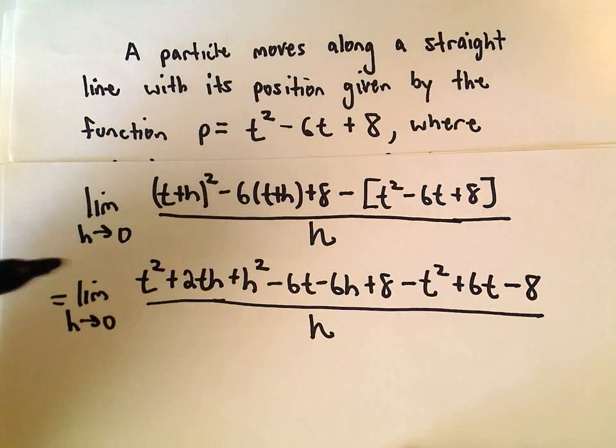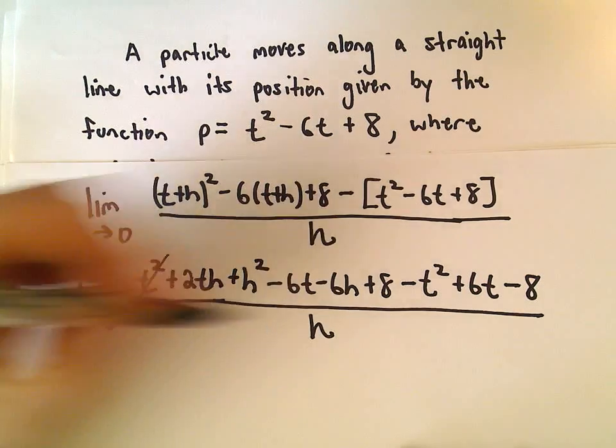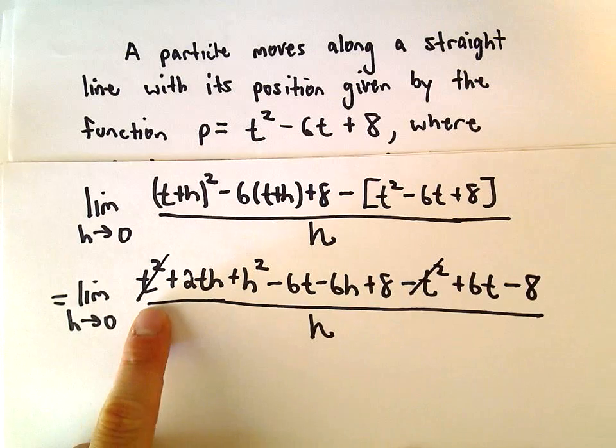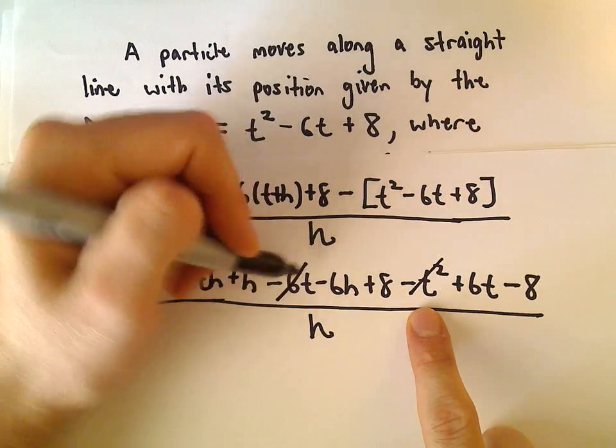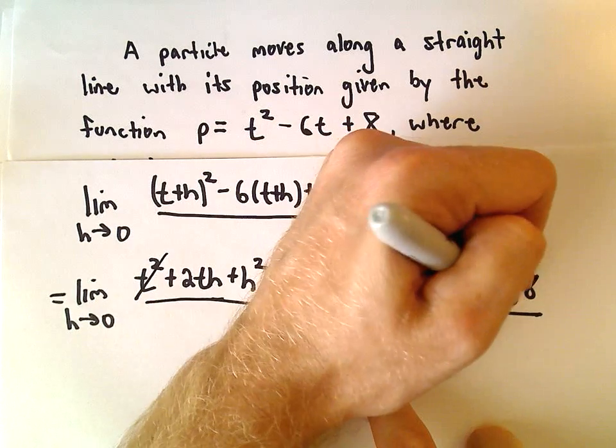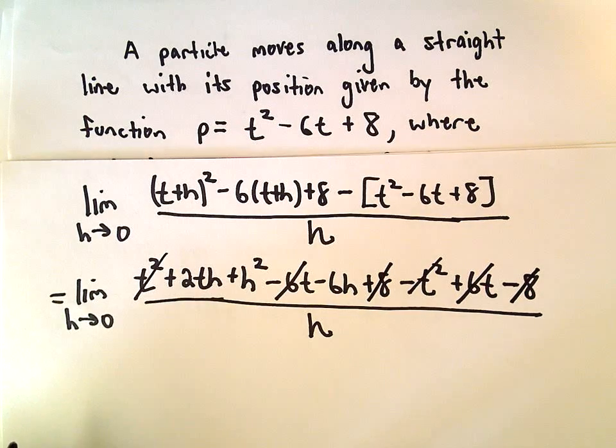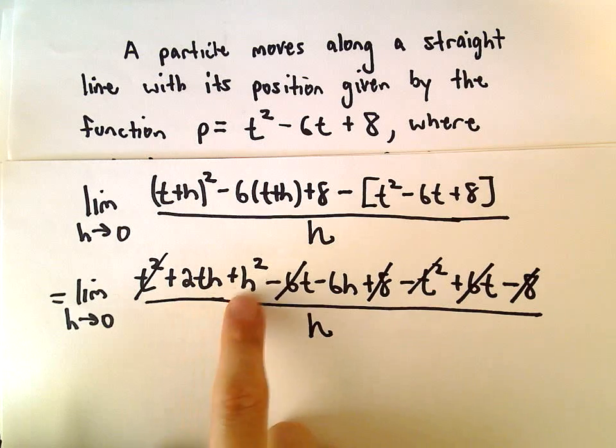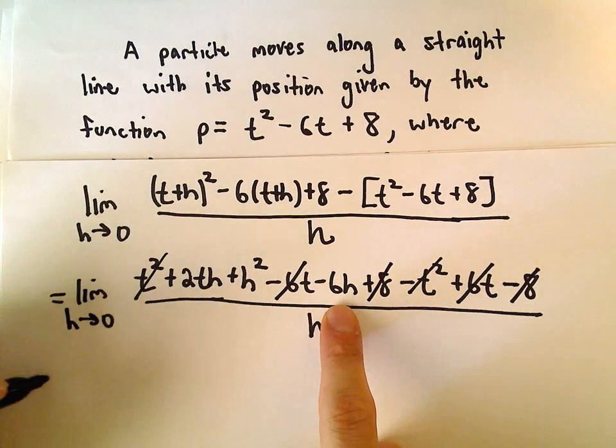And now, again, the same thing as the other examples, we'll cancel out our like terms. So t squared and negative t squared, we've got negative 6t and positive 6t, we've got a positive 8 and a negative 8, so it looks like we're left with 2t h plus h squared minus 6h.